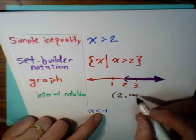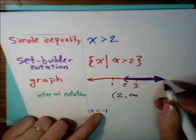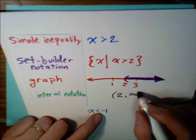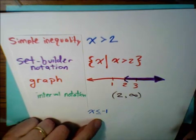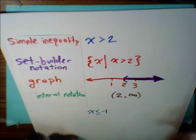And being that infinity is not a number, we can't use a bracket. We can't actually include the number infinity because it doesn't exist. We're going to use parentheses. So this is the interval: parentheses 2, comma, infinity, parentheses.